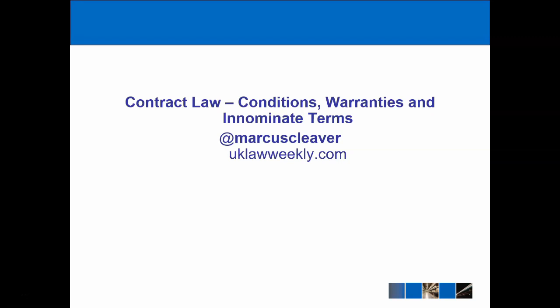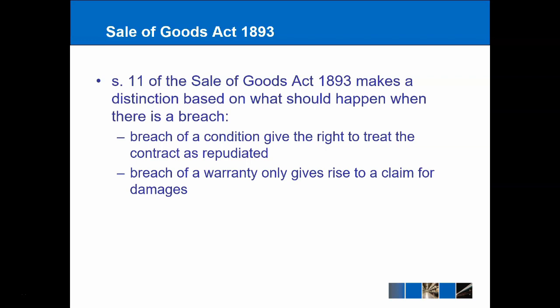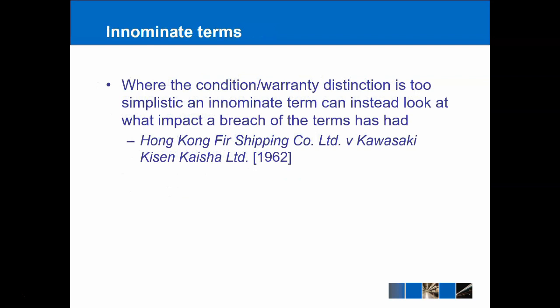Traditionally, the distinction has been made between conditions and warranties, and that has its origins in section 11 of the Sale of Goods Act 1893, which makes the distinction based on what the consequences should be if there is a breach. If there is a breach of the more important condition, the claimant is allowed to repudiate the contract and treat it as if it never existed. On the other hand, for warranties which are less important, the claimant can still bring a case but won't be allowed to repudiate — they will only be entitled to damages.